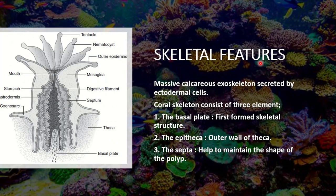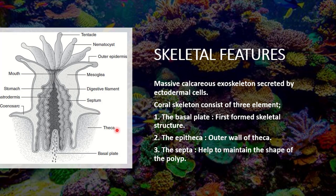Now these skeletal features — the skeletal structure. The skeleton is a massive calcareous skeleton secreted from the ectodermal cells. If we talk about the skeleton of corals, it consists of three main elements: septa, theca, and the basal plate.